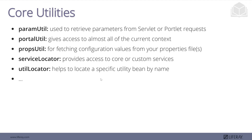Of our core utilities within Liferay, two that I want to highlight are ParamUtil and PortalUtil. ParamUtil allows us to grab parameters from either the servlet or the portlet request — so we can use ParamUtil to grab parameters coming from our render requests or our action requests. The action request specifically is one we'll be honing in on. ParamUtil is a very commonly used and powerful utility.